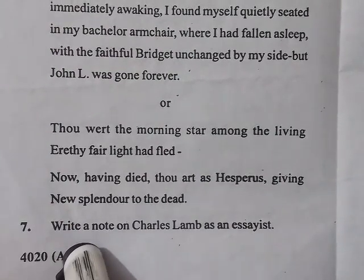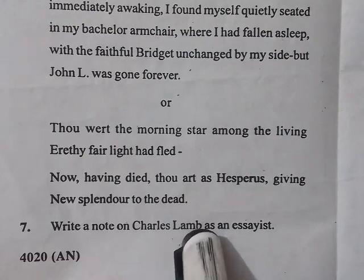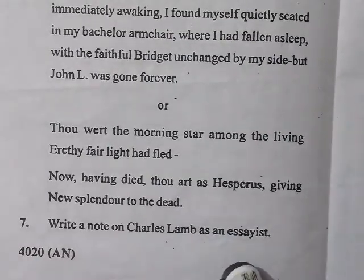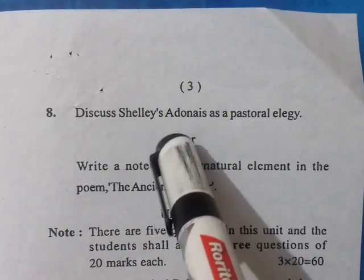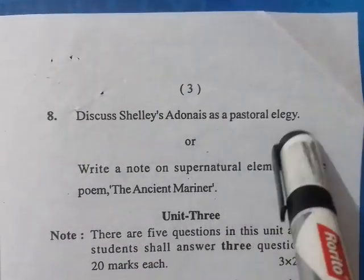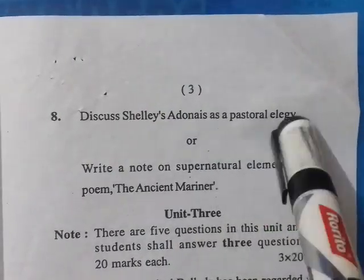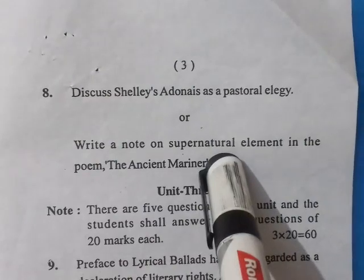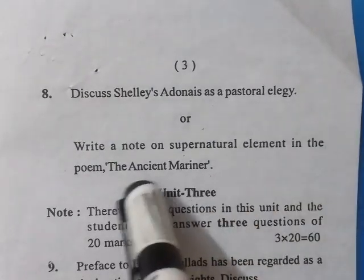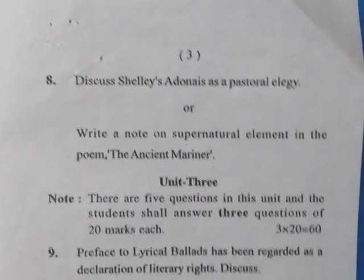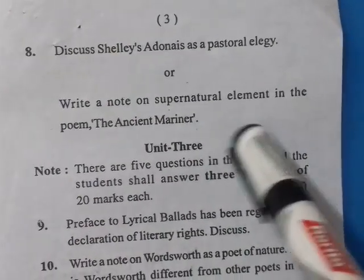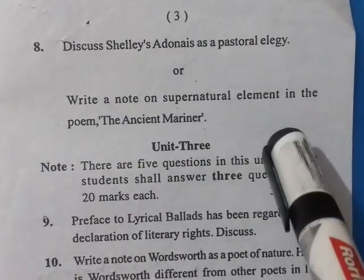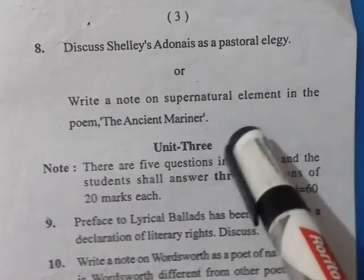Question seven: write a note on Charles Lamb as an essayist. The next question is on Shelley — discuss Shelley's Adonais as a pastoral elegy, a most important question that always repeats. Also: write a note on the supernatural element in the poem The Ancient Mariner. All these questions in Unit 2 carry only 10 marks, so they are short questions.